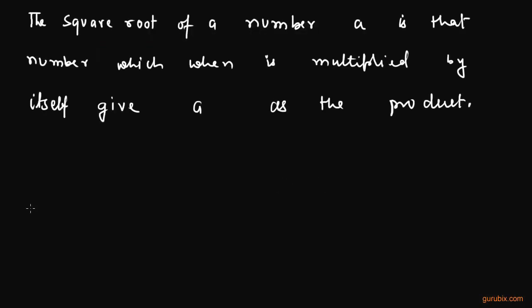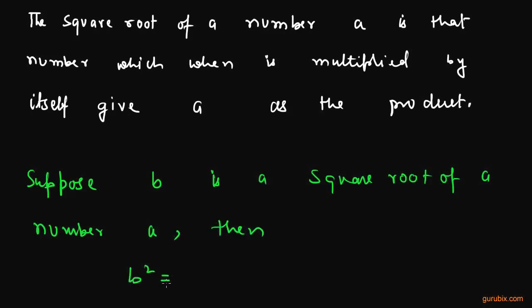Let me define it in some other way. Suppose B is a square root of a number A, then B square will be equals to B cross B, this means equals to A.